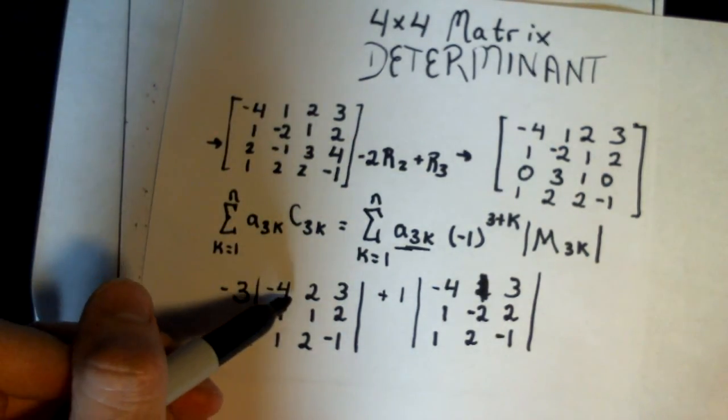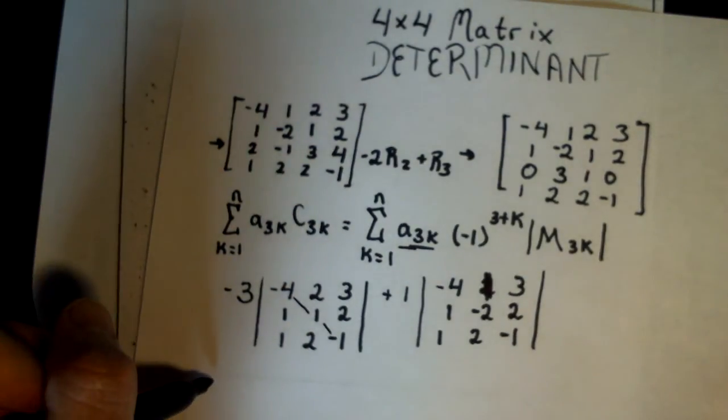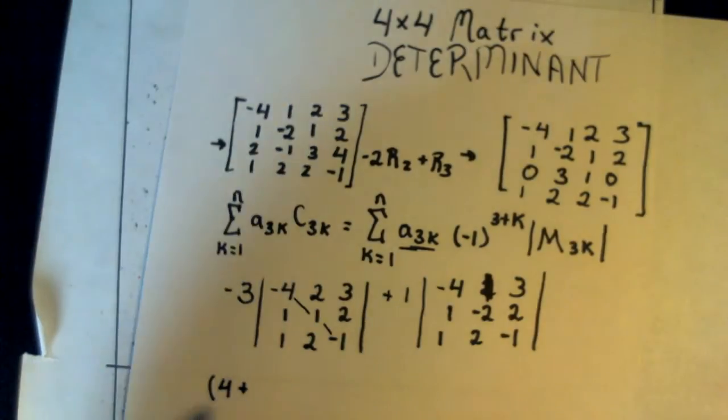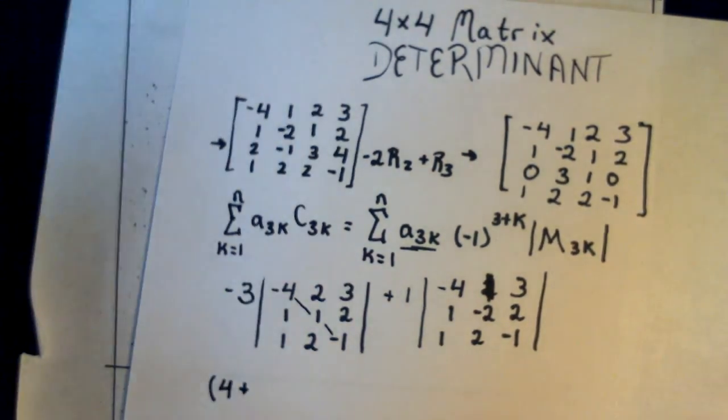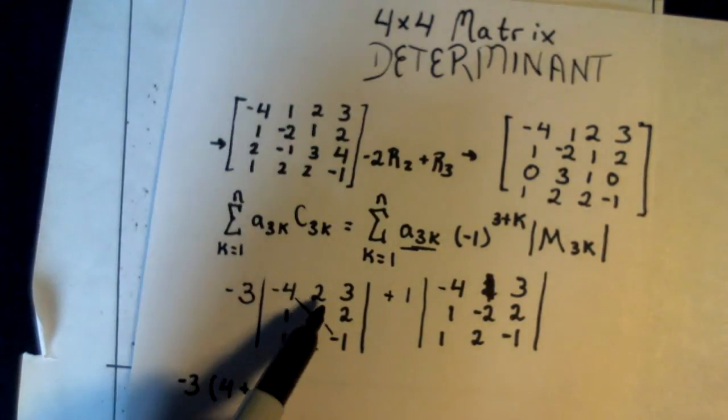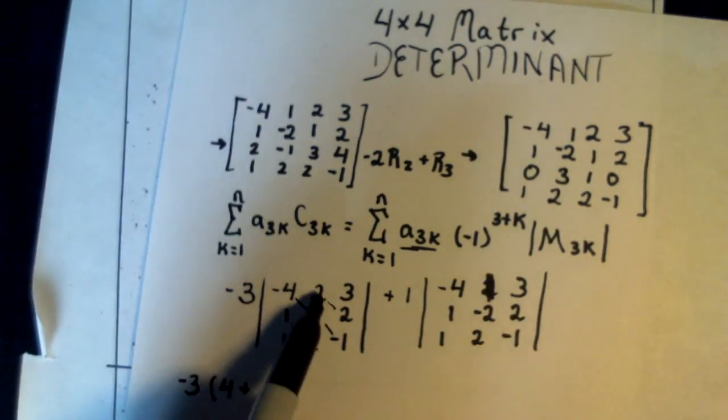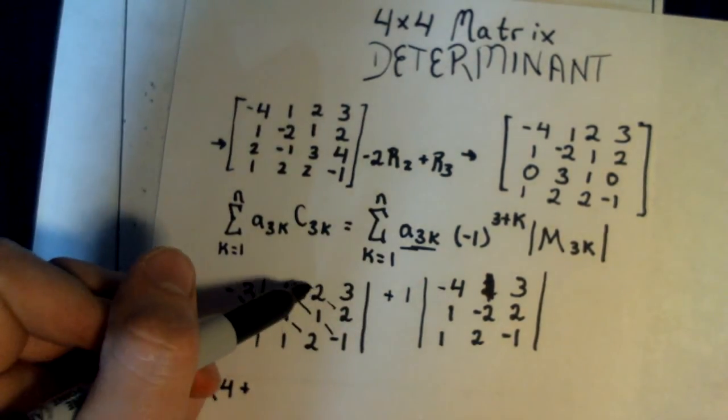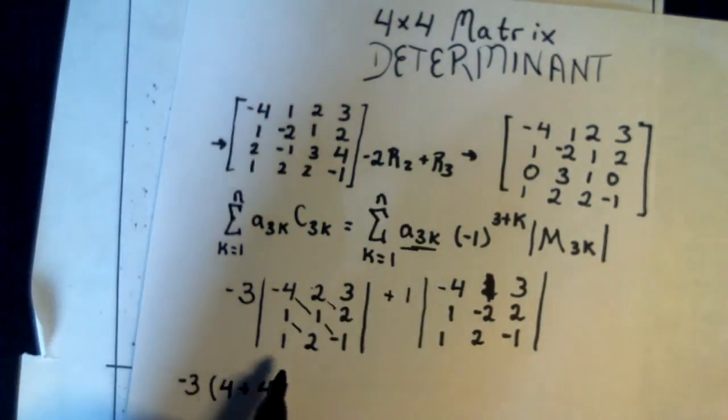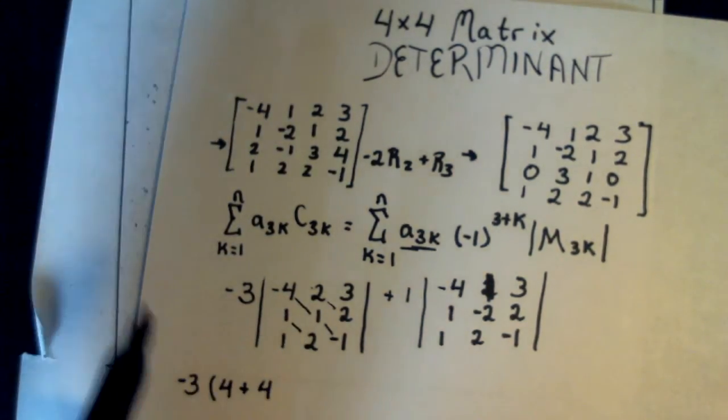We're going to multiply this diagonal to get 4. And then we're going to add, and remember we need to multiply by negative 3 in the beginning here. Then we're going to multiply this diagonal here, or excuse me, it's going to be 2 and 2 and the 1 down here, so that's plus 4.